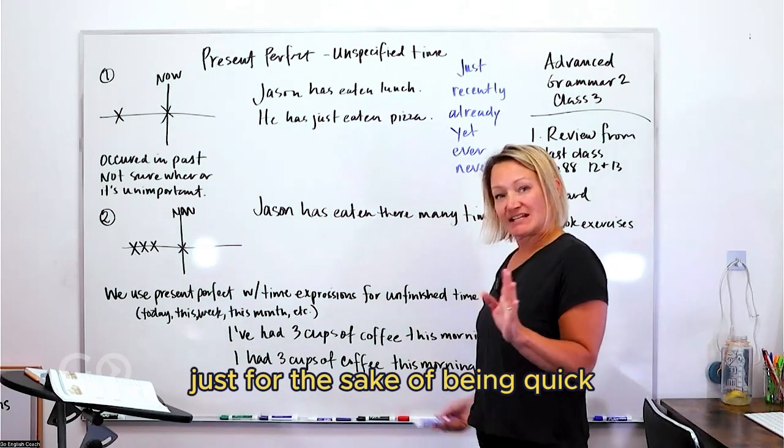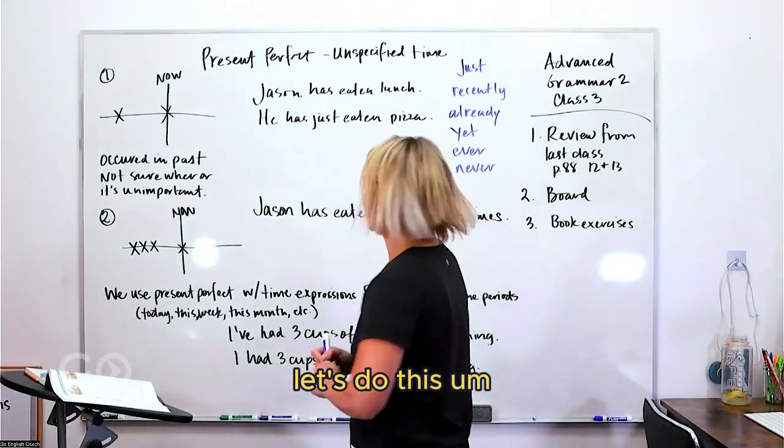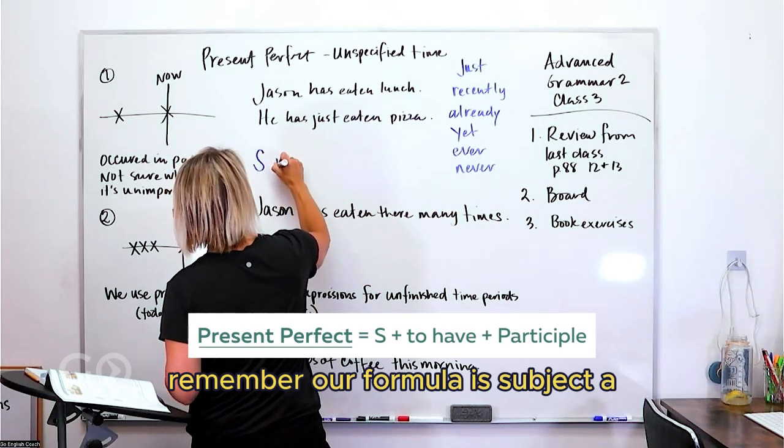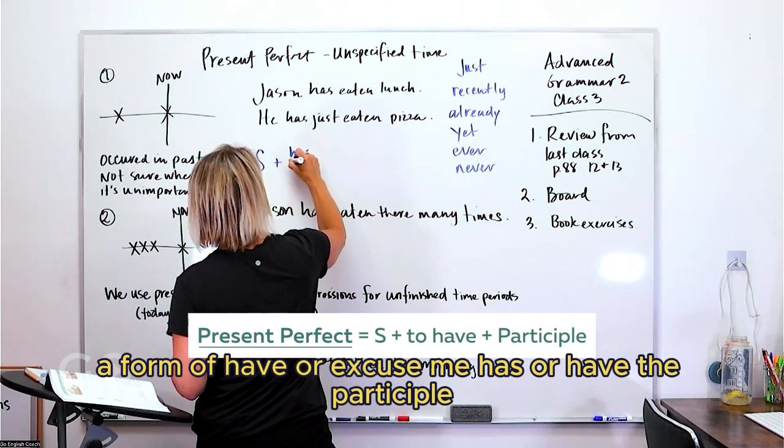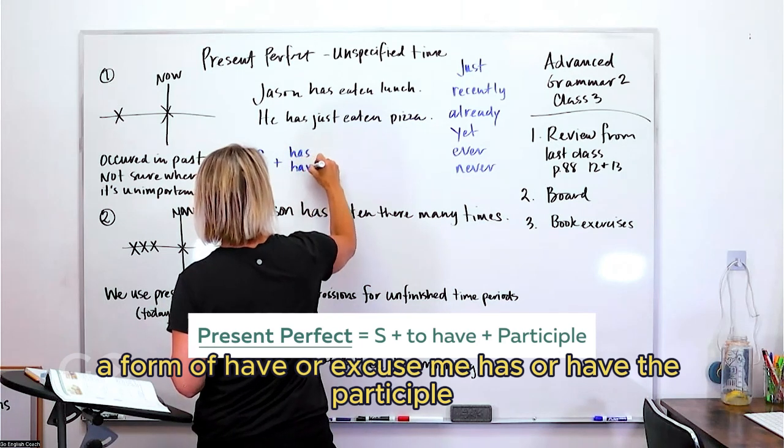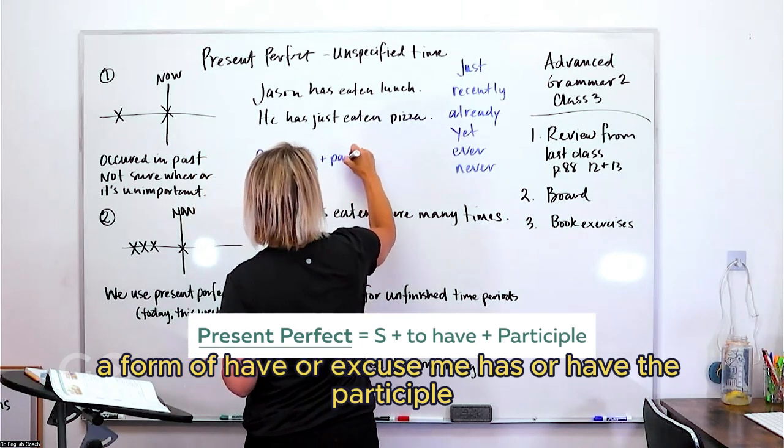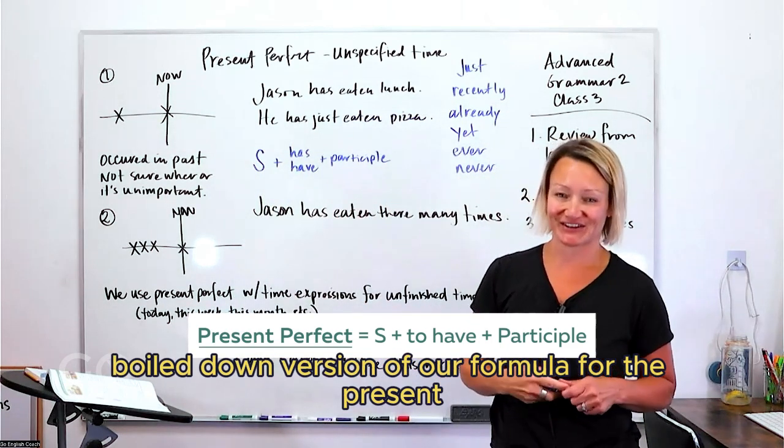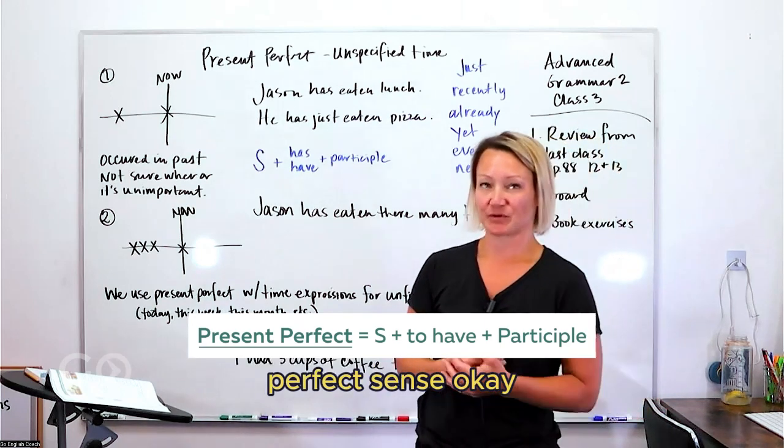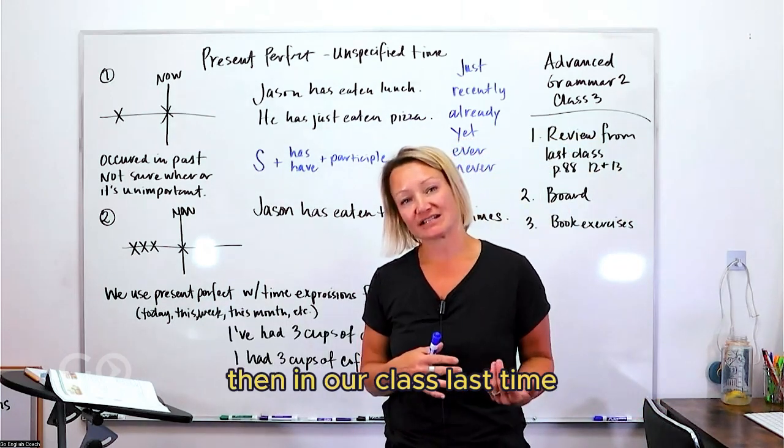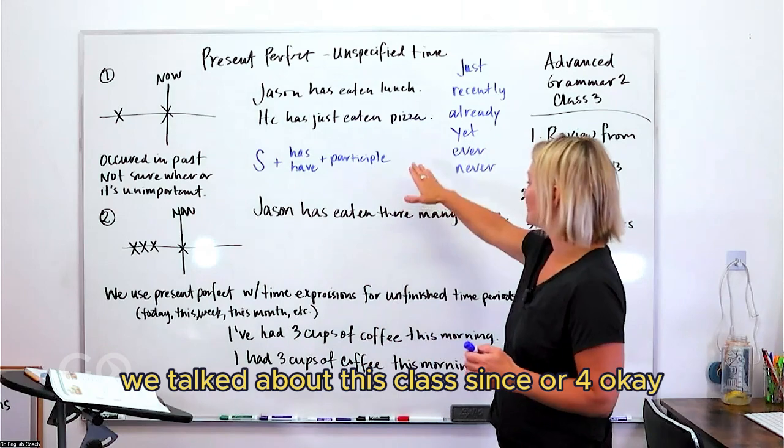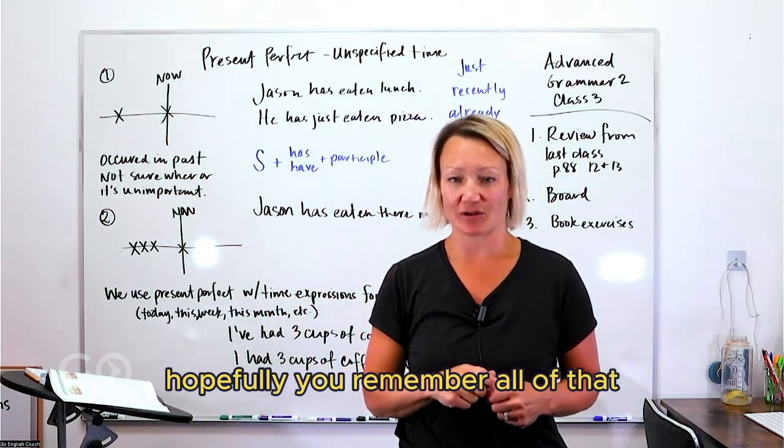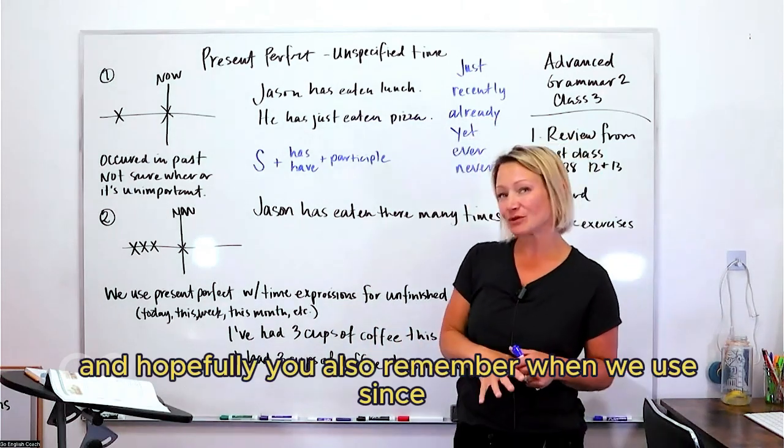Just for the sake of being quick, let's do this. Remember our formula is subject, a form of have or excuse me, has or have, the participle. Okay, that's our very simple boiled down version of our formula for the present perfect tense. Then in our class last time we talked about this plus since or for. Okay, hopefully you remember all of that.